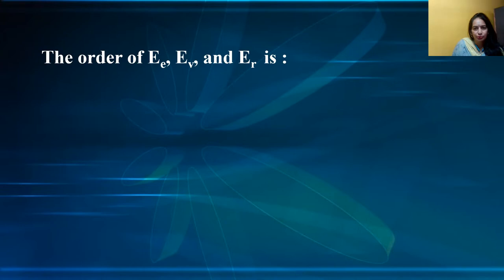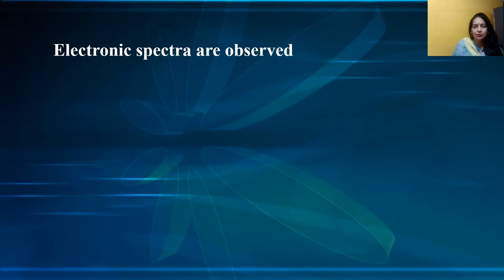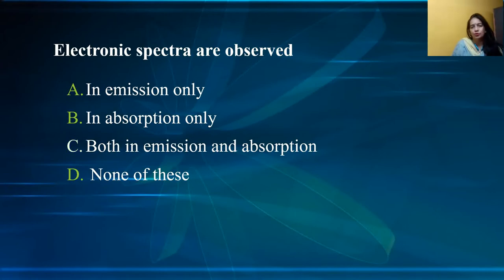The order of energies E_e, E_ν, and E_R is: E_e is greater than E_ν is greater than E_R. Regarding electronic spectra — they are observed in emission only, absorption only, or both emission and absorption. Electronic spectra are observed both in emission and absorption, so option C is the correct option.